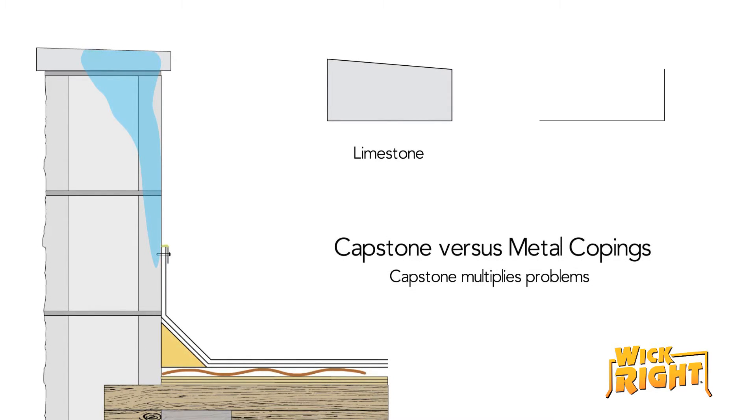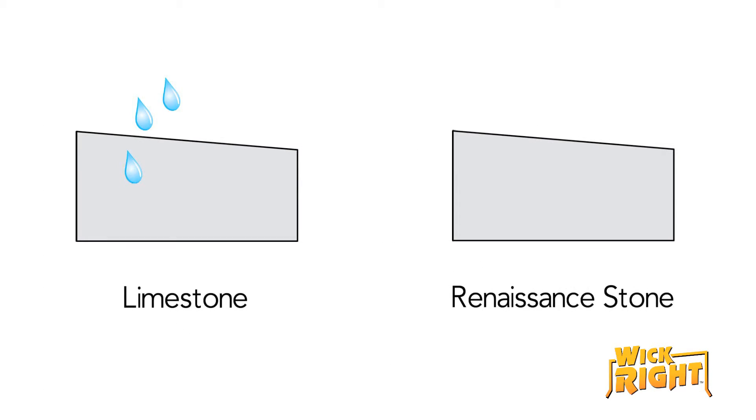Capstones are made of many different substances, but limestone and renaissance stone are the most common. Water meanders through limestone, soaking the entire stone before dripping into the walls. Renaissance stone is actually just manufactured concrete. A heavy rain pounding on renaissance stone will pour into the wall quickly.